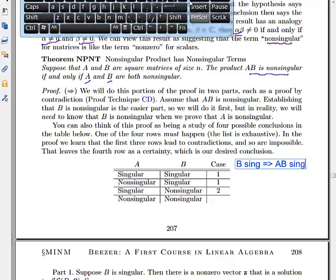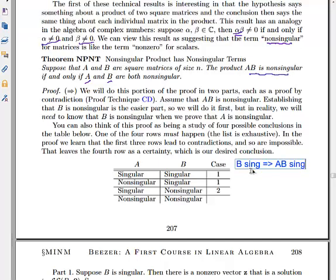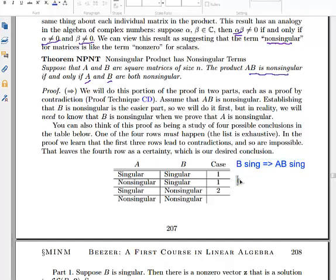The proof will be organized in two parts. First, he proves that B singular implies AB is singular. Then he proves that A singular also implies AB is singular.